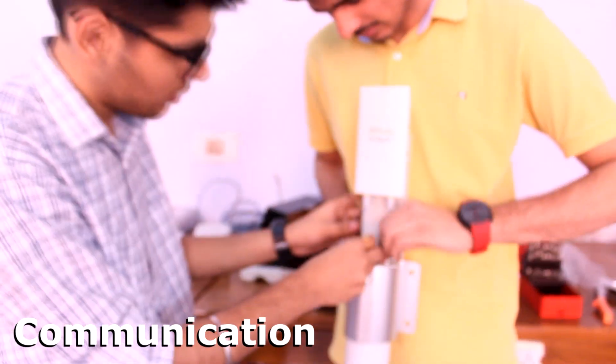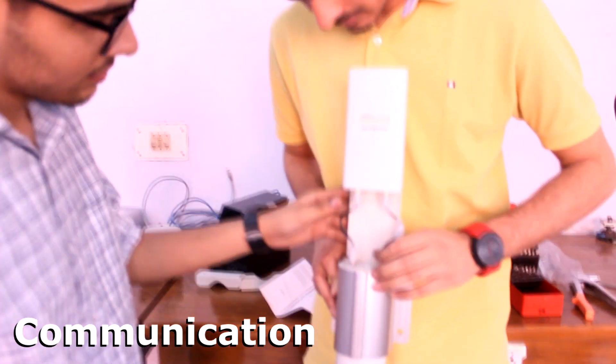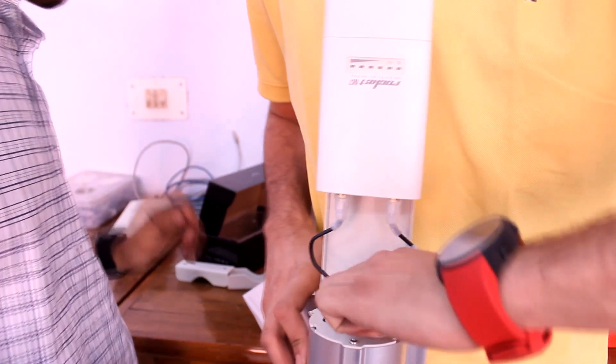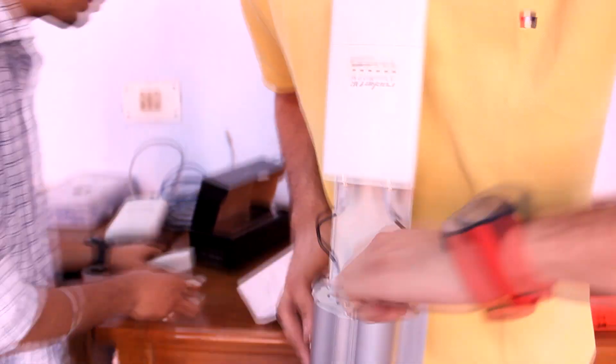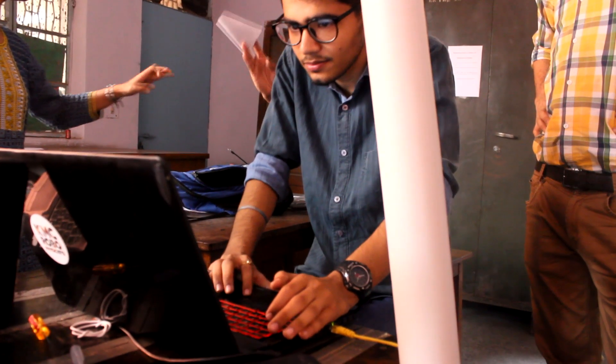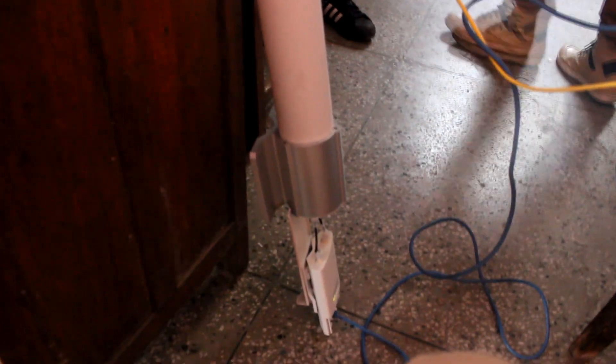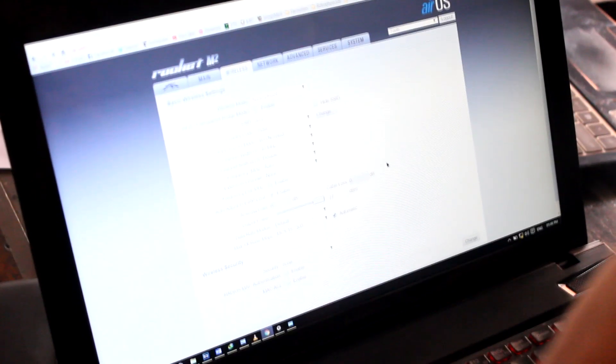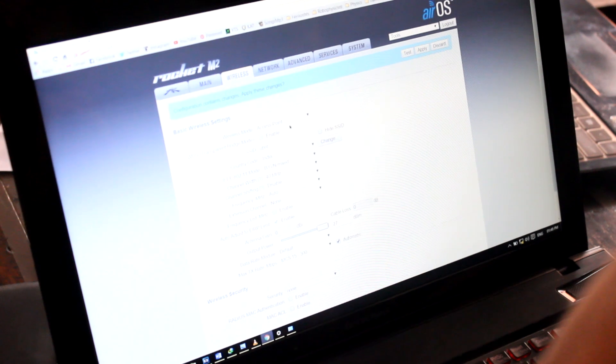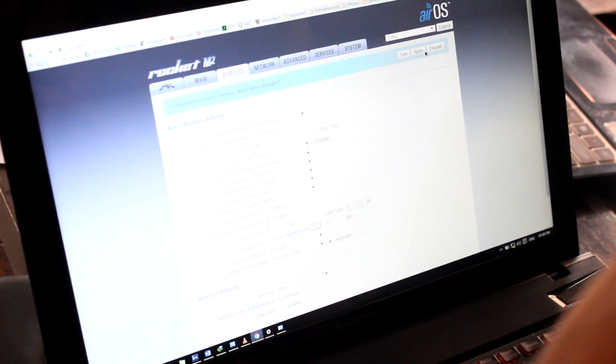The team encountered major problems in communication and electronics during the competition last year. Ergo, the team decided upon Ubiquiti's omnidirectional antenna, Rocket M2, and Nanostation M2 for communication. The omnidirectional antenna and Rocket M2 will be used at the base station for transmission.